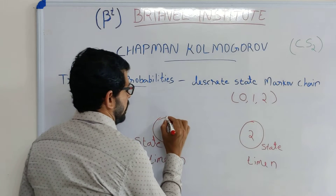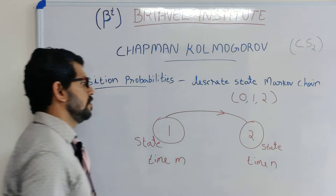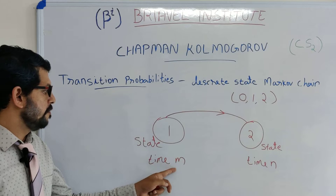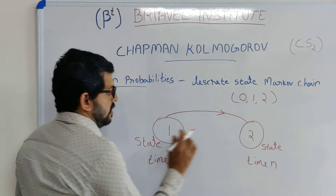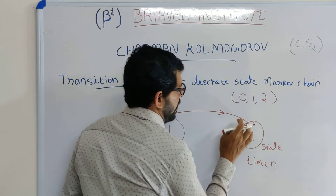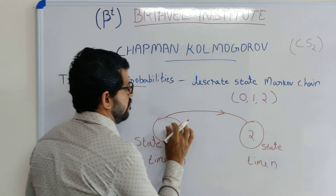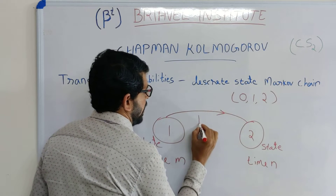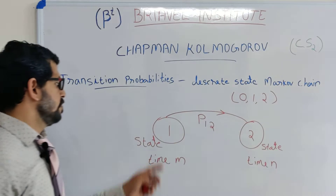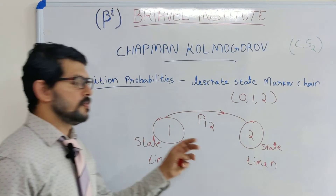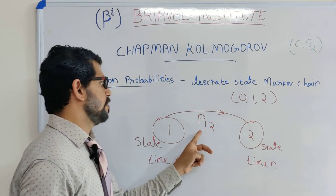We then move from state one to state two. Initially at time m we are in state one, and then we jump from state one to state two. The probability of jumping from state one to state two is represented as p12.